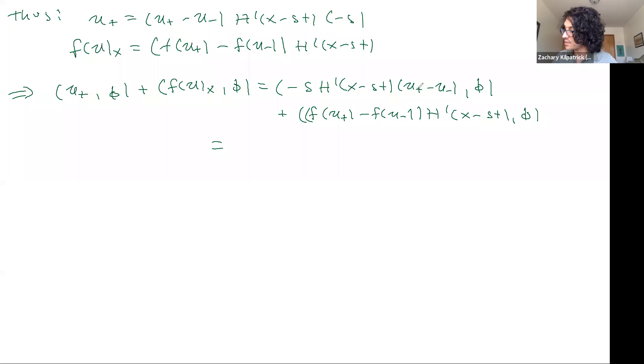That's along for the ride. S is actually a constant. U plus and U minus are constants. F of U plus and F of U minus are constants. This is the distribution that's actually doing the work here.